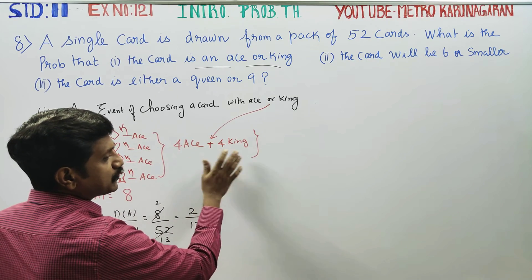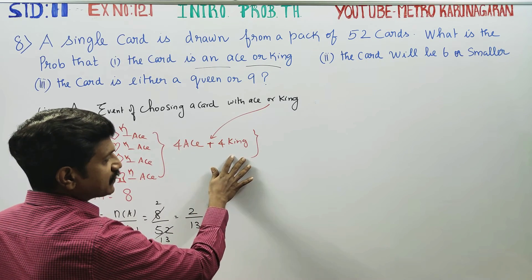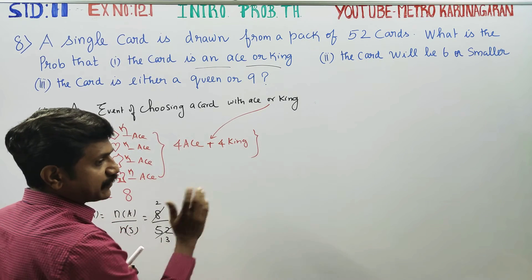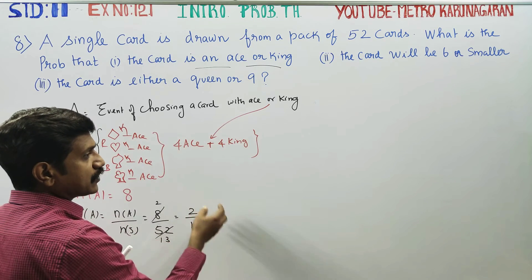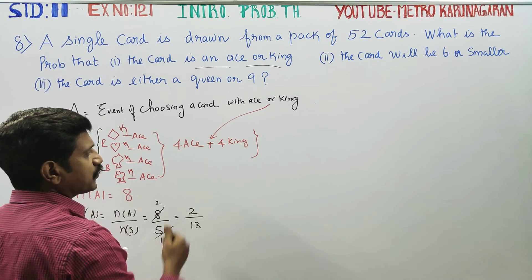Ace and king are mutually exclusive events, denoted as A union B.